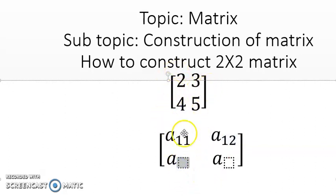And this 4, this lies in the second row and this lies in the first column, so two one (a_21). And 5, this lies in the second row and it lies in the second column, so this means two two (a_22).